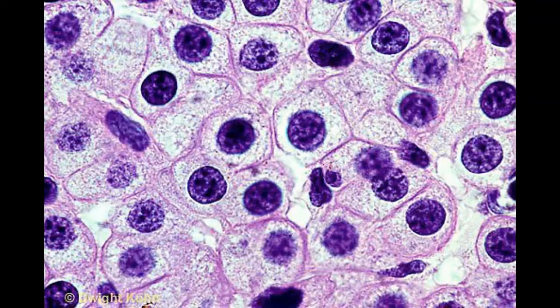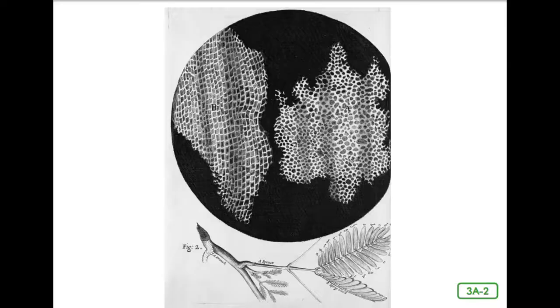In one of Hooke's first experiments with a microscope, he sliced open the stem of a cork plant and placed it under his lens. What he saw amazed him. The cork was made up of tiny walled spaces.